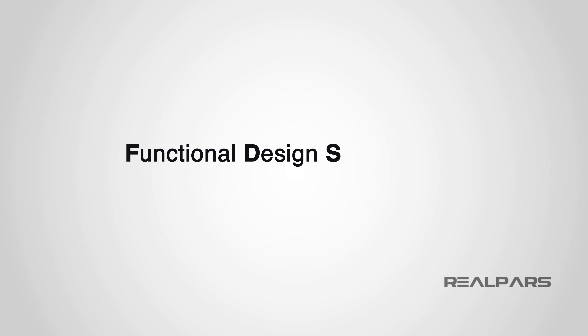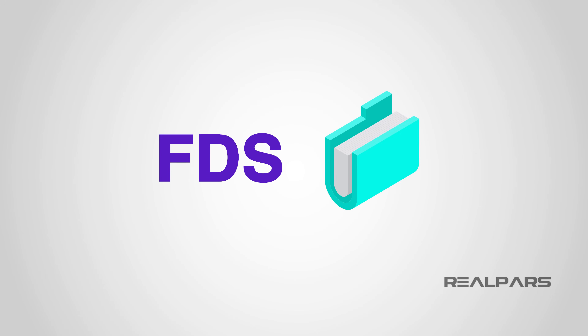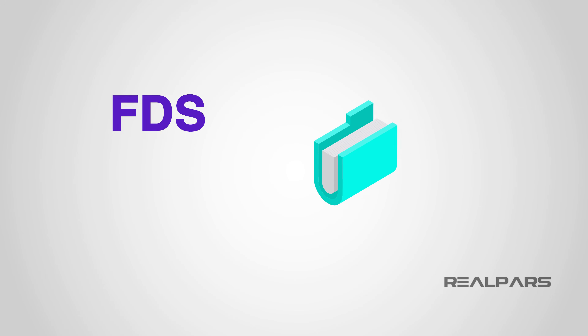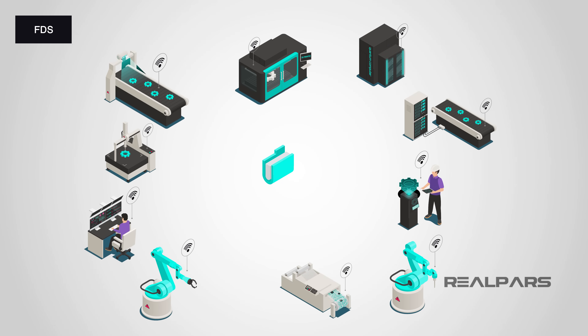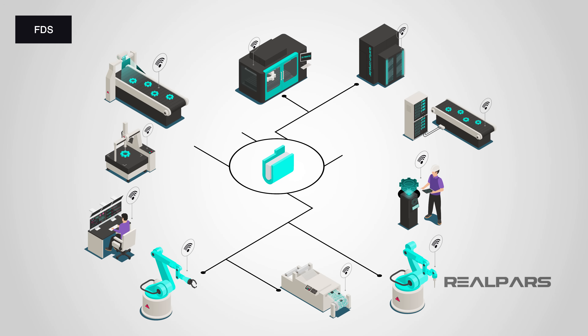A Functional Design Specification, also known as FDS, is a document that describes how a process or control system will operate. It does not contain any highly technical detail. Rather, it describes how the proposed system will operate, how people will interact with it, and what to expect when different operational scenarios occur.